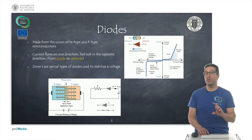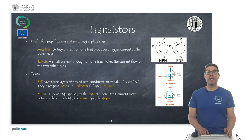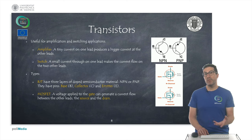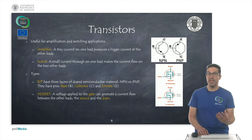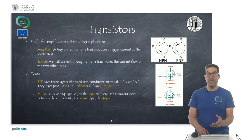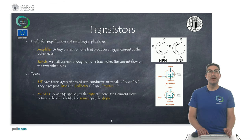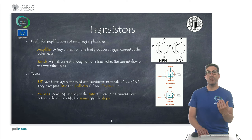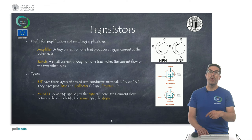Zener diodes are a special type of diode used to stabilize voltage, but we will not go into more detail about them. Transistors are another very basic component made internally of semiconductors, like diodes. They can be used in two main applications: as an amplifier, where a weak signal produces a larger signal at the output; and as a switch, where a small control current either allows or cuts off a larger current flow — essentially acting like a controlled diode.